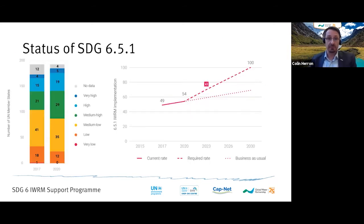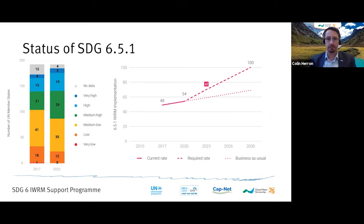Looking at that target, we can see that we have made progress — between 2017 and 2020 there is an upward trend. But we need to really accelerate that level of progress if we are to reach 100% IWRM implementation by 2030. You can see that progress has shifted more countries into the medium-high and high range of IWRM implementation.